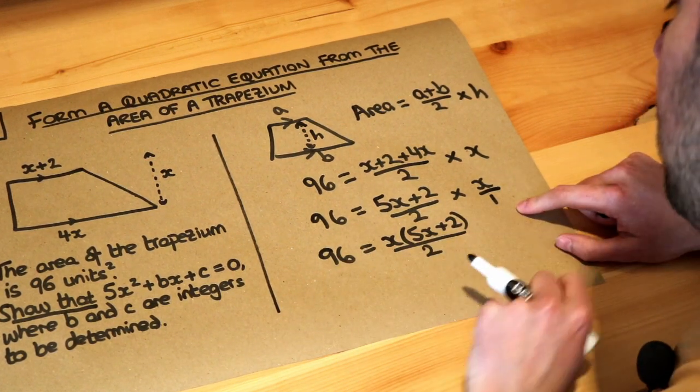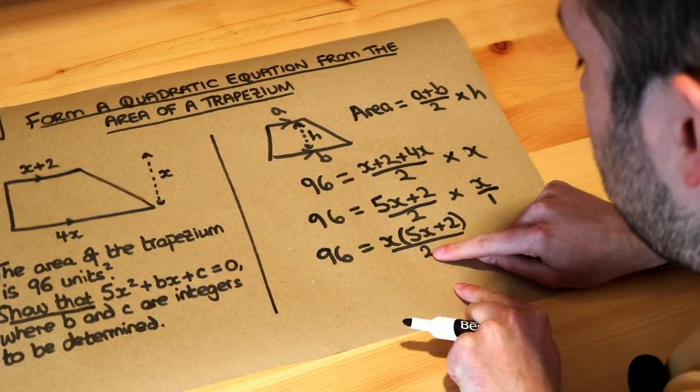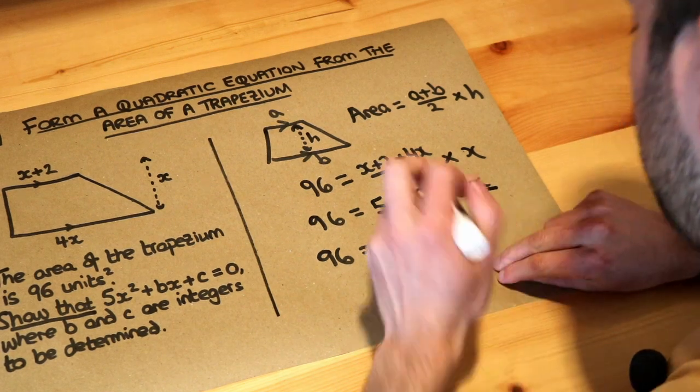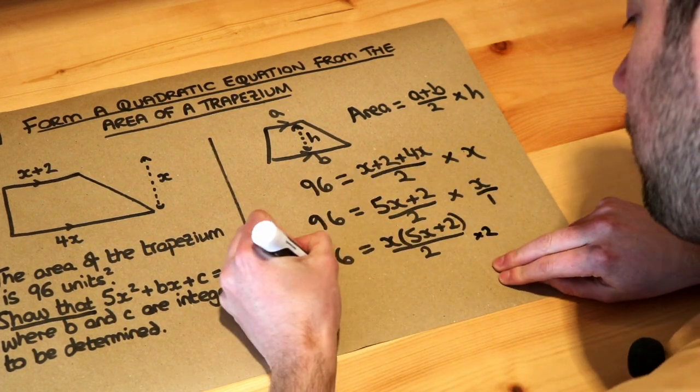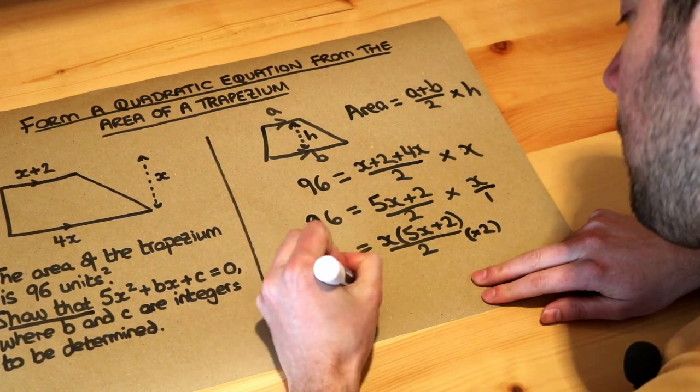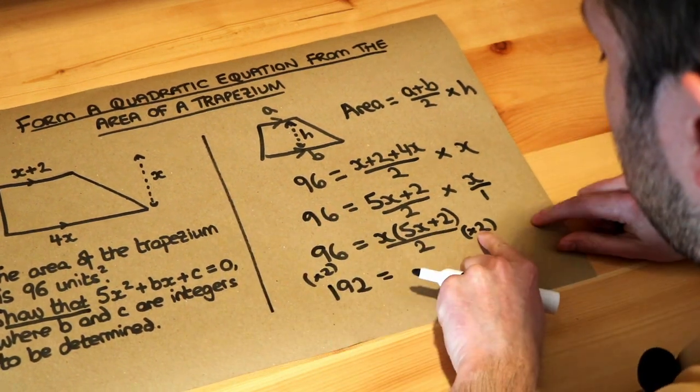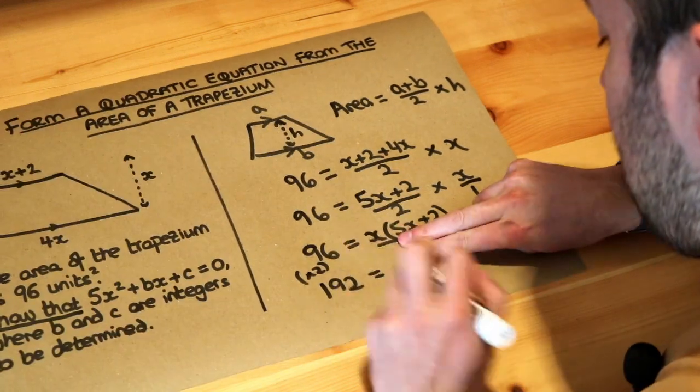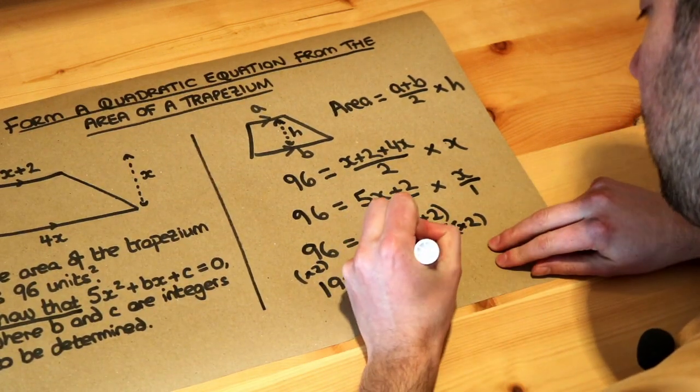Now I don't like fractions in equations, I want to get rid of this over 2 here. To get rid of the over 2, you multiply both sides by 2. So the left-hand side becomes 192, and on the right-hand side, the times 2 cancels that over 2, and we're left with x brackets 5x plus 2.